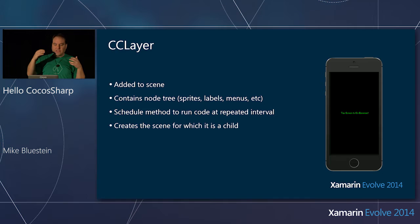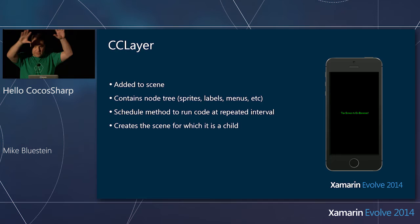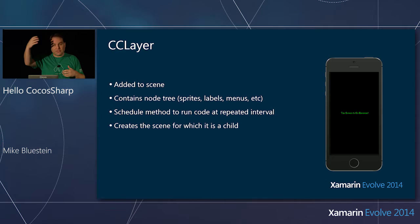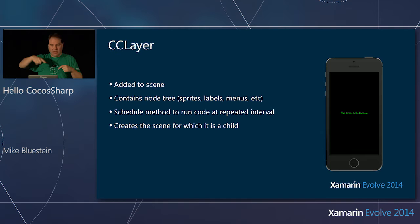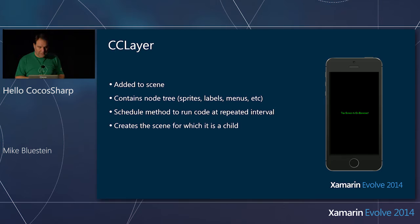The CC Layer is added to a scene and contains the node tree. Nodes are everything in the scene graph — sprites, labels, menu systems. You can schedule timers within the scene to do things every time through the game loop or at specific delta times. You can put game logic in the timer, such as checking collisions or deciding when to end your game.